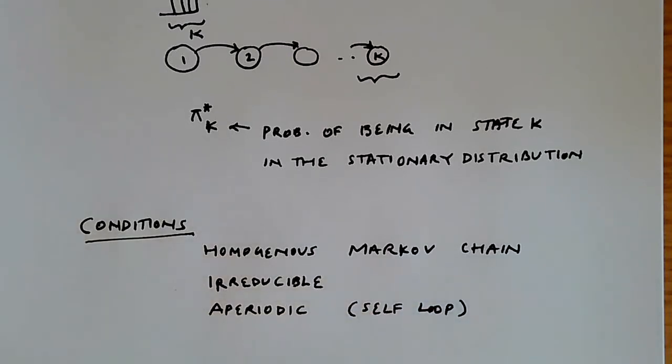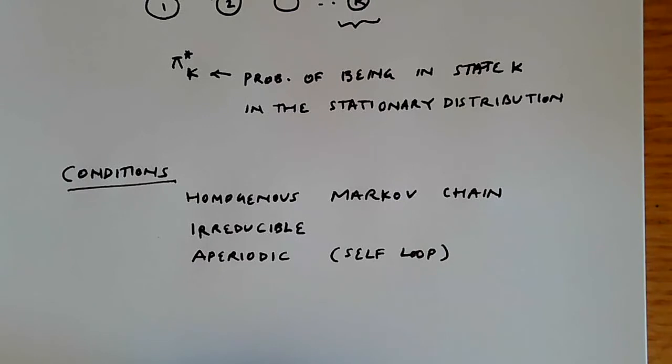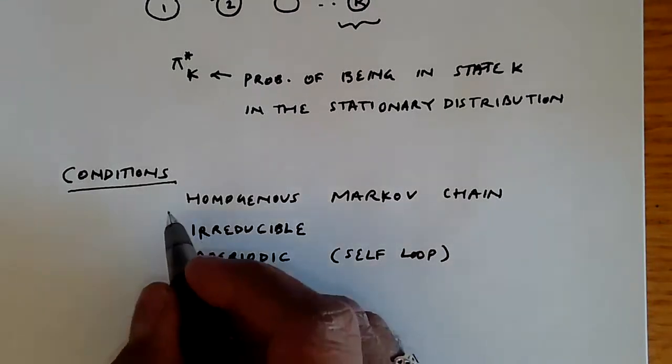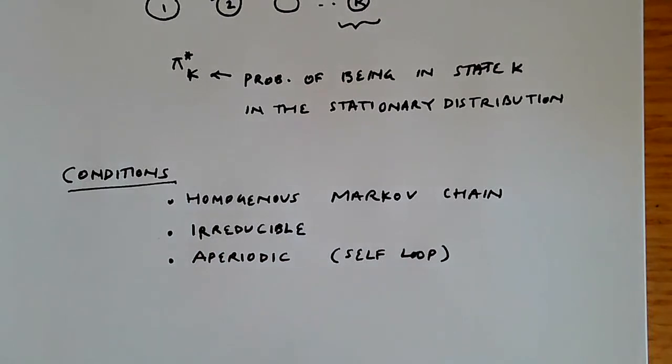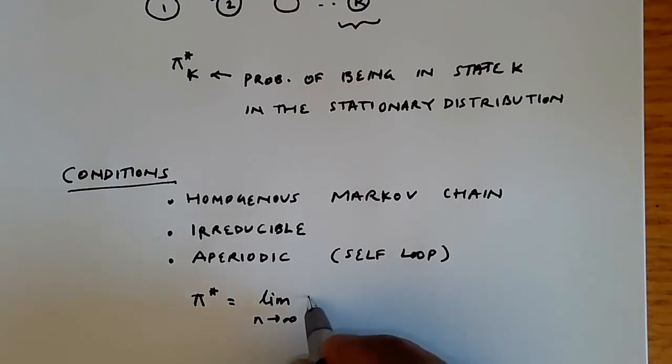And if these conditions hold, so this is the first condition, the second condition, if these three conditions hold, then this value pi star can be found as the limiting probability distribution limit n tends to infinity pi n.